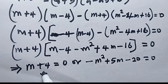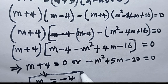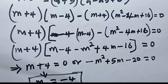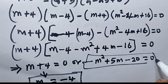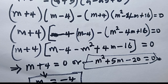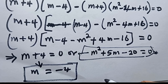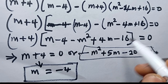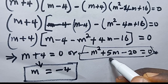Using the zero product property, this implies either m + 4 = 0 or the other factor equals 0. From m + 4 = 0, we get m = −4, which is the first solution. Now I'll go ahead and solve the remaining quadratic to obtain the other two values of m.